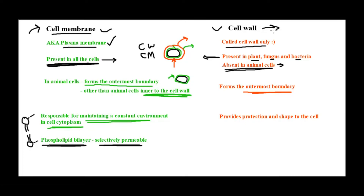For cells that have a cell wall, the cell membrane still takes care of maintaining the internal environment. The cell wall's role is to give protection and shape to the cell. It is the outermost layer and primarily protects the cell. Especially for plants — since plants are autotrophs that make their own food and cannot move from place to place — they need more protection compared to animal cells.